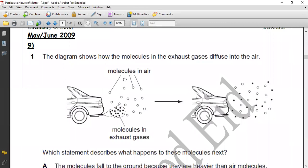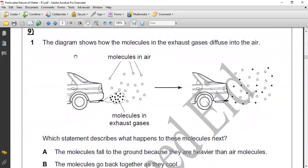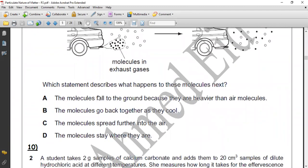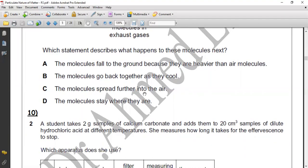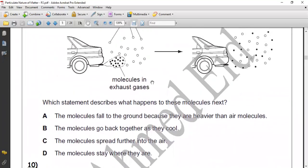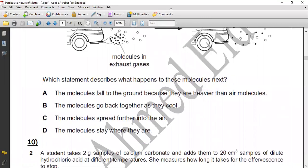Question 9. The diagram shows how molecules of exhaust diffuse into the air. Molecules of exhaust in air, it diffuses. Which statement describes what happens to these molecules next? Molecules float to the ground because they are heavier than air. Molecules go back together as they cool. Molecules spread further into the air. Molecules stay where they are. As we can see, molecules spread further into the air. So the correct answer: C.